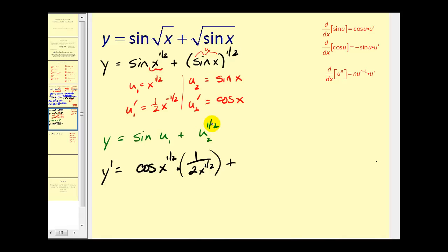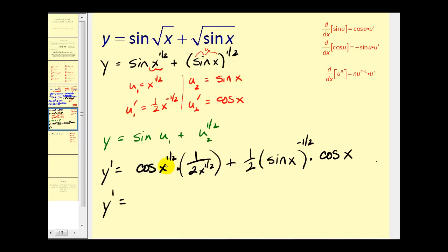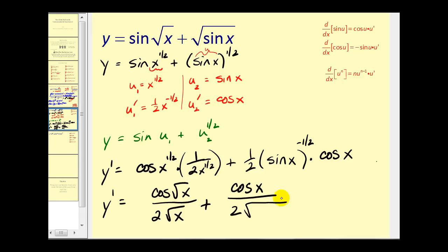Plus, the derivative of u to the 1/2 is 1/2 u to the negative 1/2, where u is sine x, times u prime which is cosine x. Cleaning this up: x to the 1/2 is the square root of x, so we get cosine of square root of x, all over 2 square root of x, plus cosine x over 2 times the square root of sine x. Using subscripts helps keep the two composite terms straight.